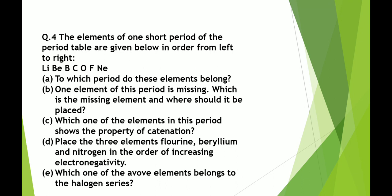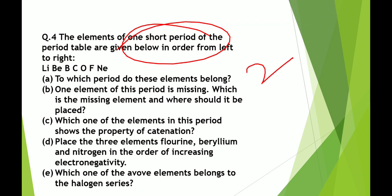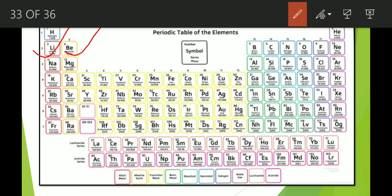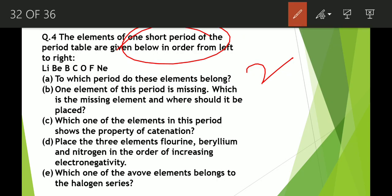Next question: the elements of one short period of the periodic table are given below in order from left to right — lithium, helium, boron, carbon, oxygen, fluorine, neon. First question: to which period do these elements belong? You have to memorize at least the first 20 elements of the periodic table in chronological order by atomic number. Looking at the elements — lithium, helium, boron — these belong to period 2. The answer is period 2.